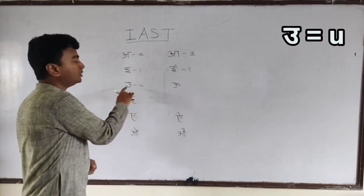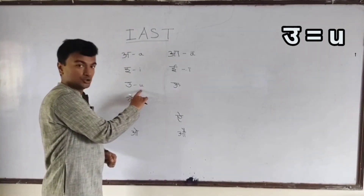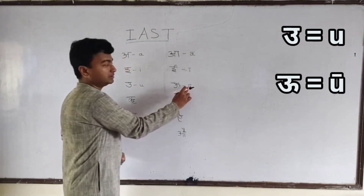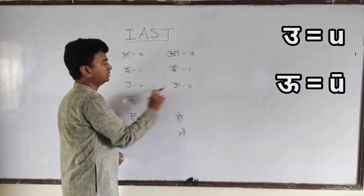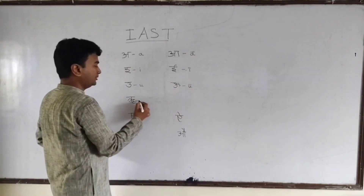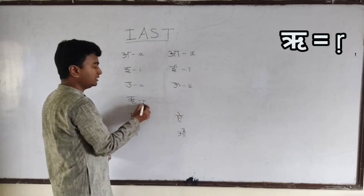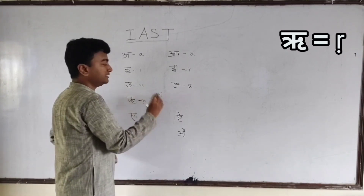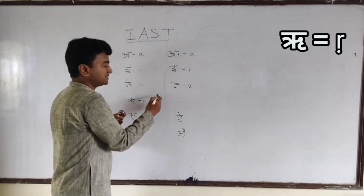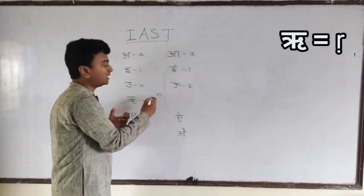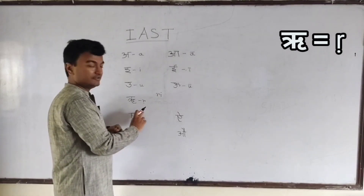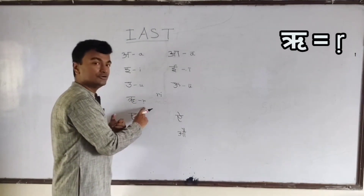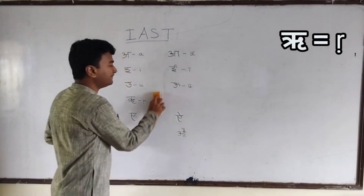Likewise, the short 'o' is represented by a small 'u', and the long 'ū' is represented by 'u' with a bar. So 'u' is the short form and 'ū' is the long form. The vowel 'ṛ' (ṛe) is represented by 'r' with a dot at its bottom. This is not pronounced as overwhelmingly as the compound 'ri' — it just has a certain r-ish sound. It is 'ṛ', and it is a vowel in the Devanagari alphabet.